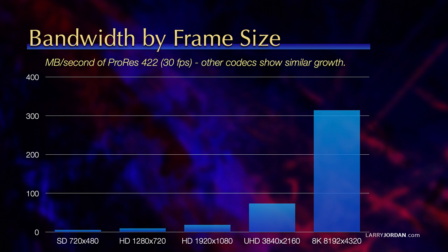If we take a look at bandwidth by frame size, this shows megabytes per second for ProRes 4:2:2 at 30 frames per second. Standard definition is trivial — 13 megabytes per second or less. 1280x720 HD is also not a big deal. We start to see around 30 to 40 megabytes per second for 1080 HD. 4K is pushing 70 to 80. And look at 8K — we all know it's coming. It's 300 megabytes per second for an 8K image.